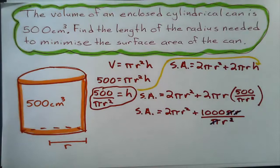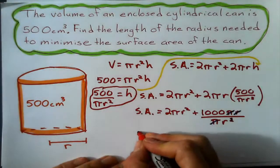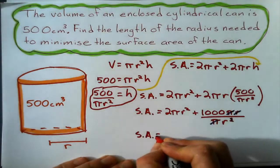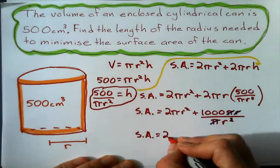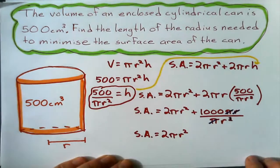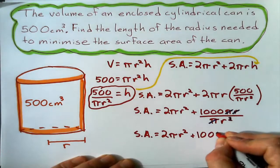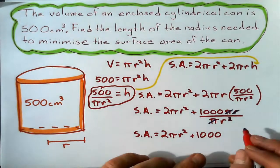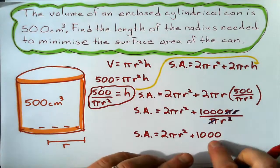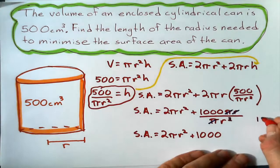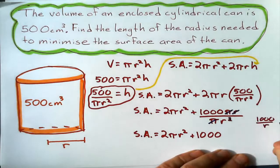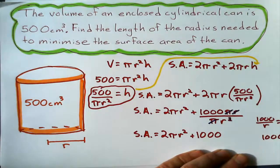So my expression, or my formula, ends up being surface area is going to be of my cylinder, 2 pi r squared plus 1000. Now, this is over r. This is 1000 over r, which is the same as 1000 r to the negative 1.